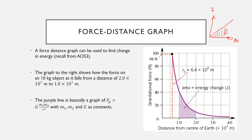The area under a force versus distance graph tells you something about the energy of the system — you might be increasing or decreasing the energy, but we can work out the change in energy by looking at that area. This graph here shows how the force on a 10 kilogram object changes as it falls from a distance of 2×10⁷ meters to 1×10⁷ meters — from here to here.